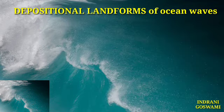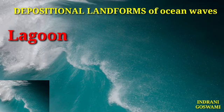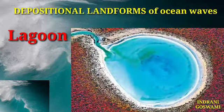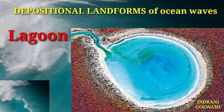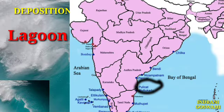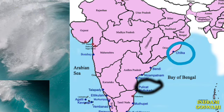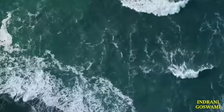A lagoon, also known as a haff, is formed when bars further extend and sea water becomes partially enclosed between the coast and the bar. A lagoon generally maintains a connection with the open sea through a narrow gap between the bar and the headlands. In India, Pulikat Lake, Chilka Lake along the east coast, and Vembanad Lake on the Kerala coast are the best examples of lagoons.